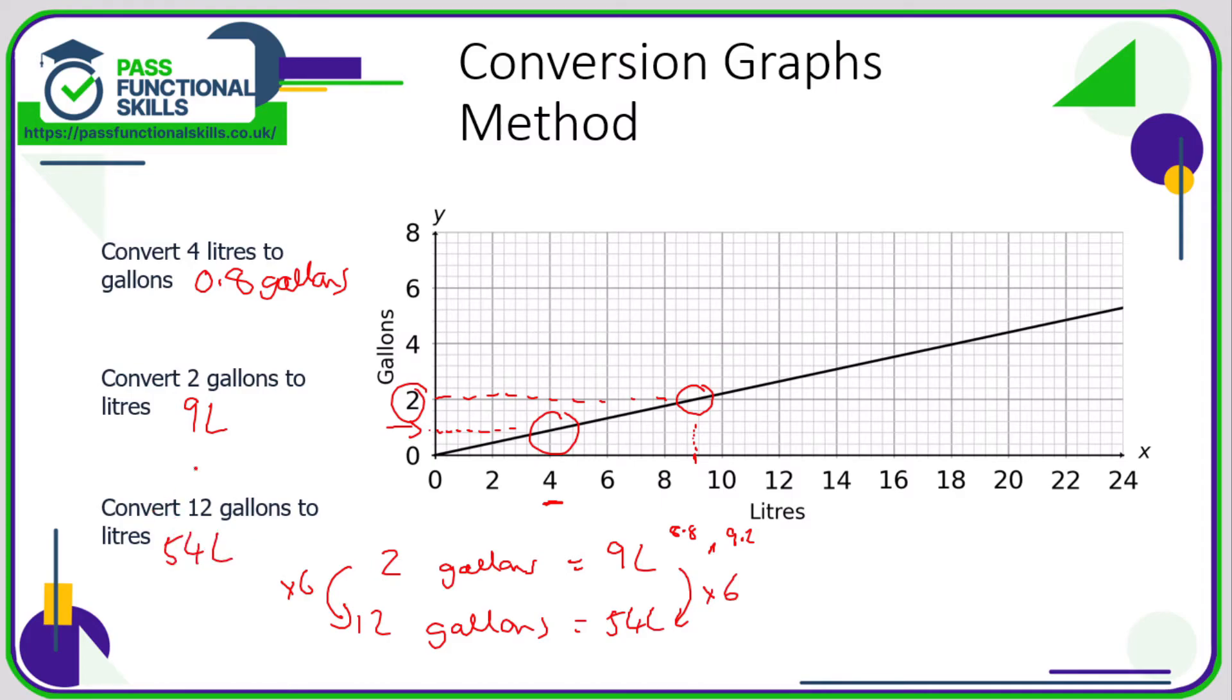In this third question here, we're using a previous answer to help us because the previous question has given us a conversion rate. If this was the only question, then what you would do is just go to the graph and find somewhere on the line where you can get a nice conversion rate. I'm looking for a line that goes through a nice set of values, so I'm looking at this point here: 4 gallons equals 18 liters. We're trying to convert 12 gallons. Well, that is 3 times greater than 4, so 18 times 3 is still 54.